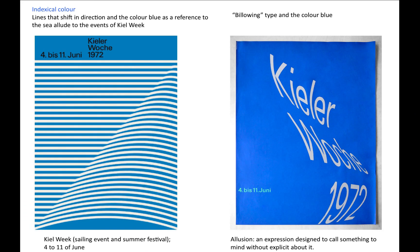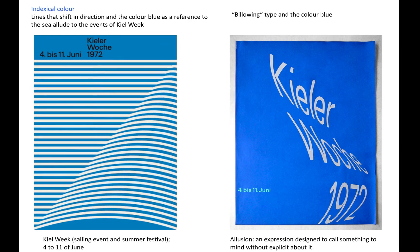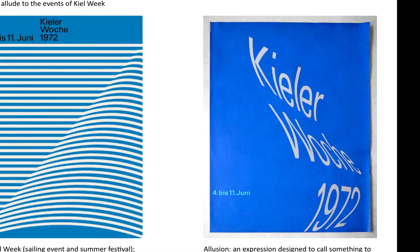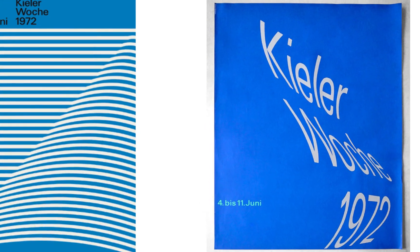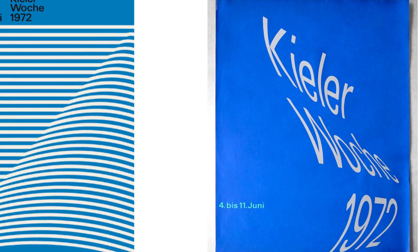Indexical color. Lines that shift in direction, combined with the color blue as a reference to the sea, allude to the events of Kiel Week, a yachting festival. Billowing type and the color blue communicate a similar idea.